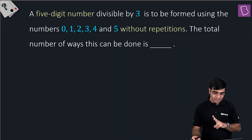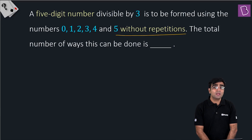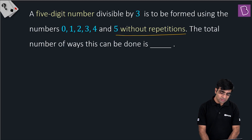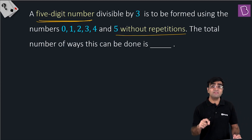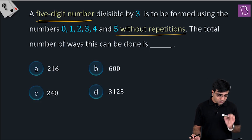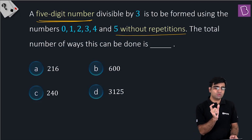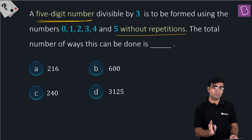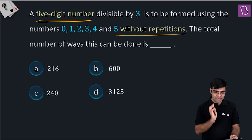A five-digit number divisible by 3 is to be formed using the digits 0, 1, 2, 3, 4, and 5 without repetition. You have to give the total number of ways. The options are 216, 600, 240, and 3125.